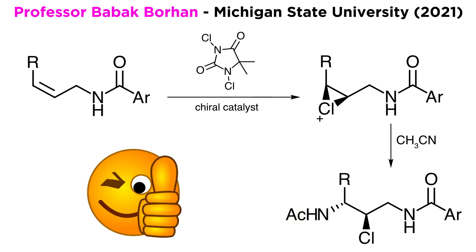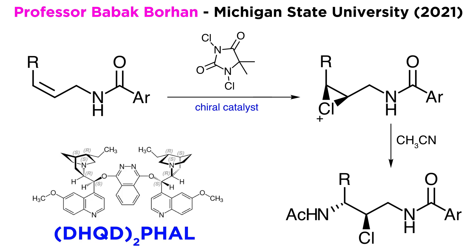The idea worked perfectly well. The ideal catalyst was found by screening, and it turned out to be DHQD2PHAL, a derivative of quinine, and this yielded 98 to 99% EE for most substrates, which means complete enantioselectivity. The regioselectivity was also essentially complete, and only one isomer out of four possible ones was obtained in high yield. The amount of catalyst required was only one mole percent.